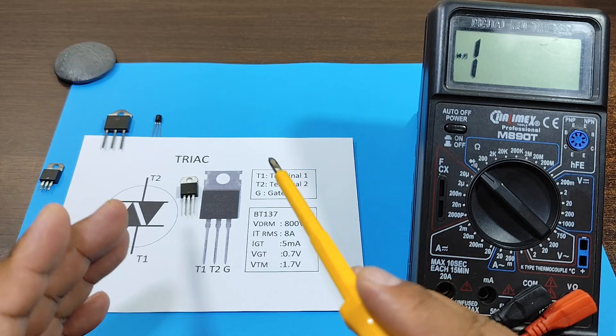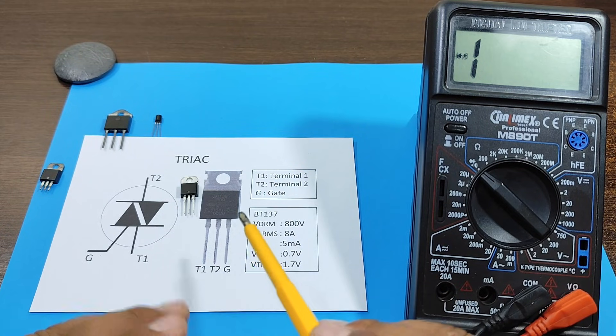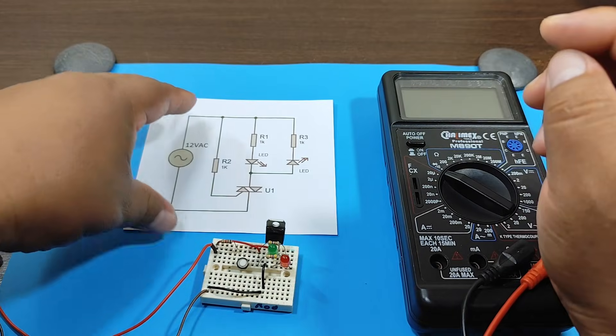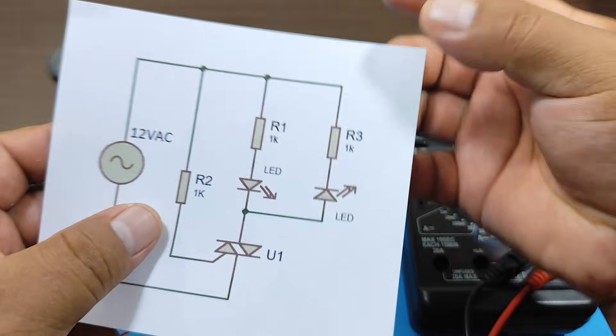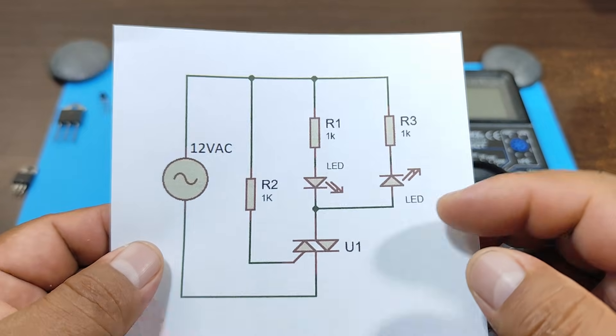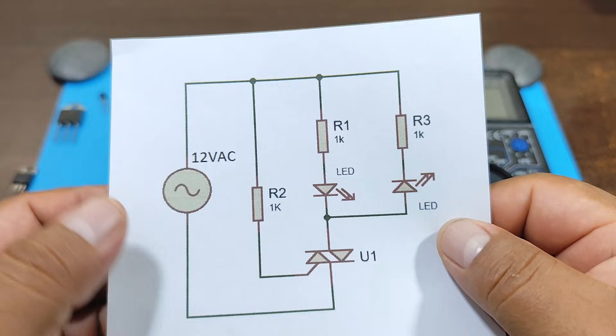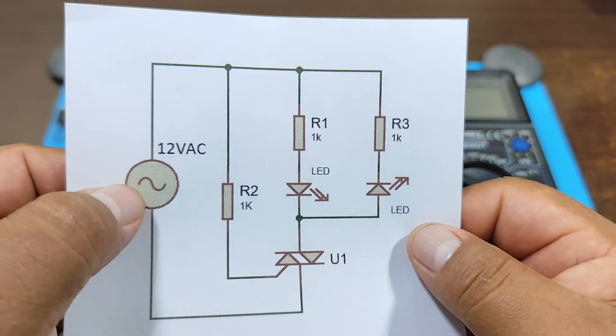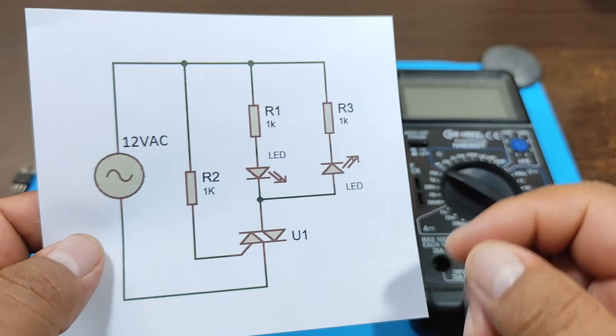Well, that's regarding the characteristics. Now let's look at some practice. Alright, now let's look at some practice. First, we're going to analyze this circuit, in which we can see that we have 12 volts of alternating current, which we will use to confirm that the triac can work with alternating current.